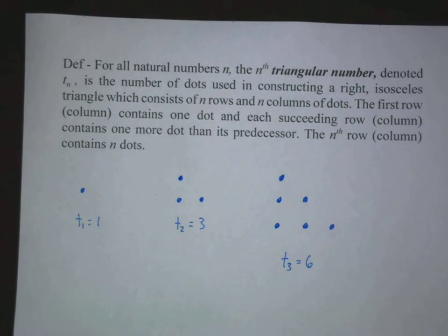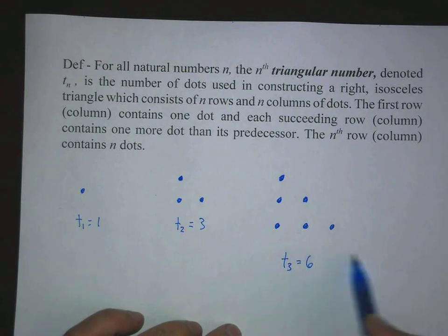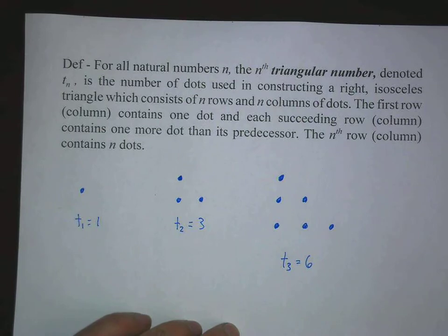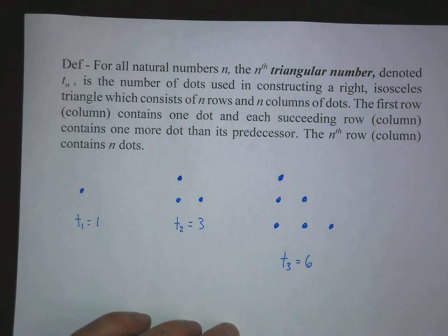Now if we were to continue this and construct our fourth triangular number, we'd have a row of four dots down here. And that means our fourth triangular number would be six plus the four dots down here, which is 10.